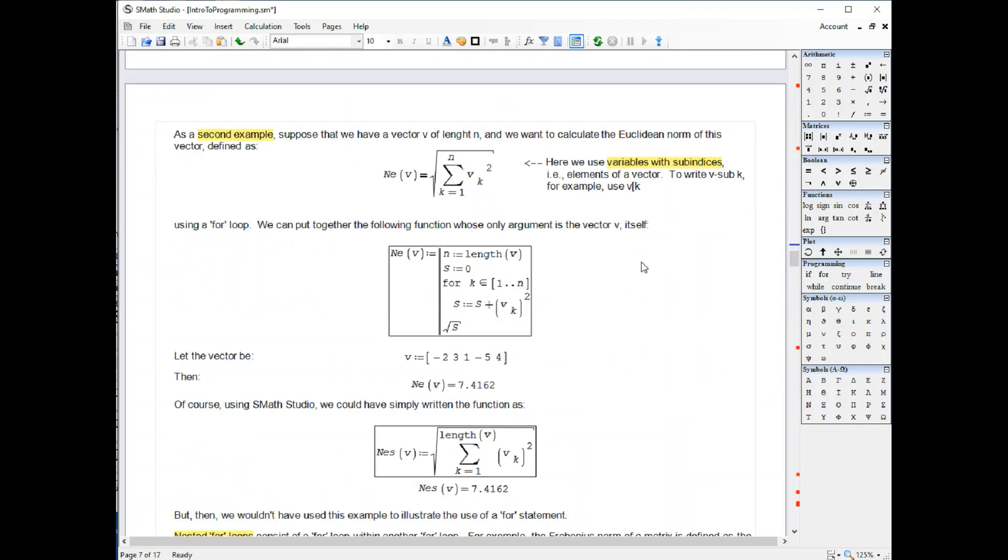To see another example, this is the so-called Euclidean norm of a vector. A vector will be something like this, a row vector or a column vector. In this case here, we have five elements. And basically, what we're doing is if n is the length of the vector, we're going to take the components of the vector, square them, add them together, and then take the square root of them.